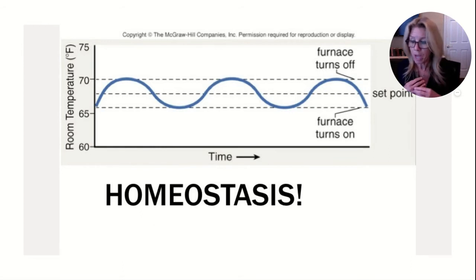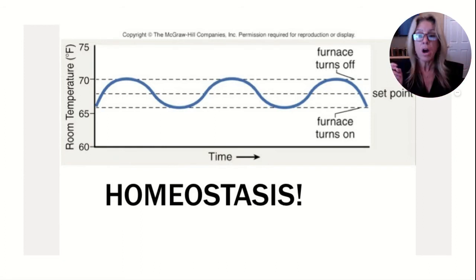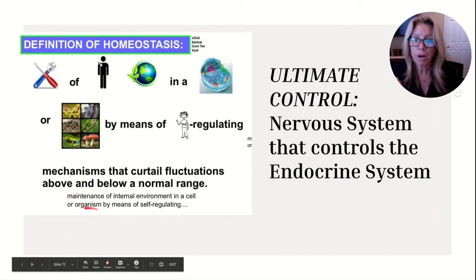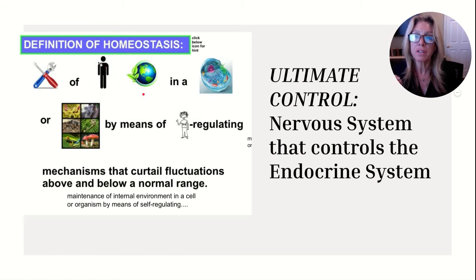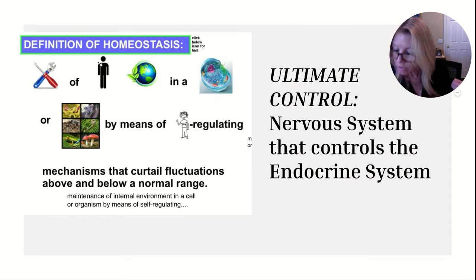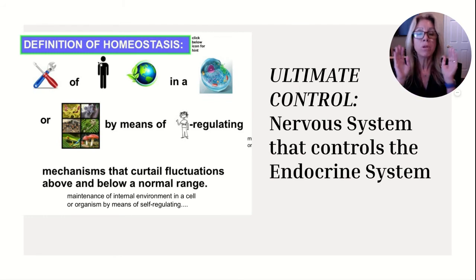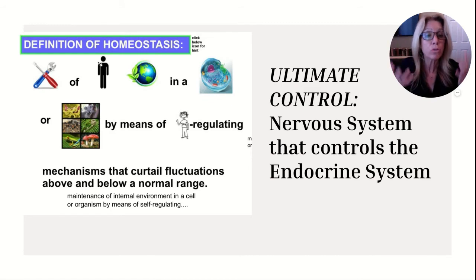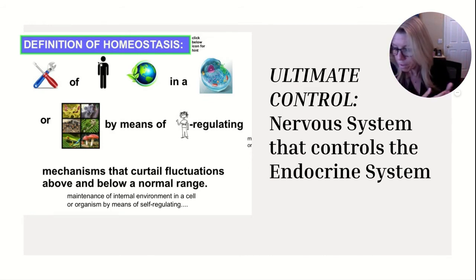Now let's review a few more behaviors. Homeostasis means maintenance of the internal environment in a cell or organism by means of self-regulating mechanisms that curtail fluctuations above and below a normal range. In your notes: dynamic equilibrium of internal environment. There are several systems that contribute to homeostasis, but the ultimate control falls upon the nervous system controlling the endocrine system.